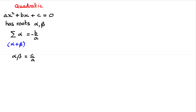Hi there. If you looked at my earlier video on roots of quadratics, you'd have seen that ax squared plus bx plus c equals zero is our quadratic equation. If it had roots alpha and beta, I showed you that the sum of the roots, alpha plus beta, equals minus b over a, and the product of the roots, alpha times beta, equals c over a.